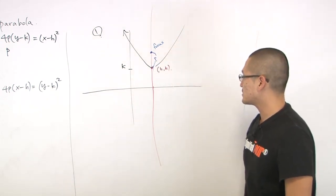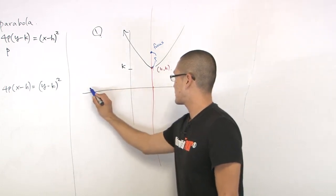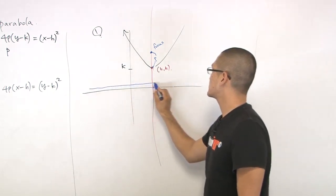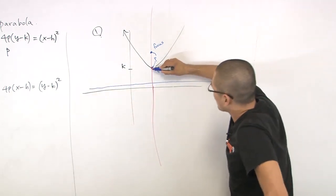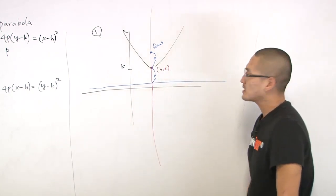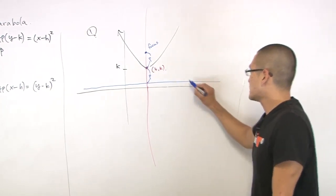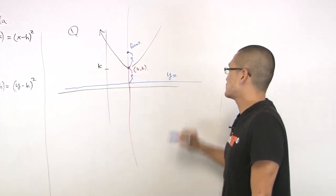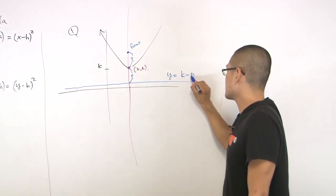And there's another line, I know this is confusing here, but another line that is P away from below this point. So you can tell that this line will be y equals to k minus P, right?